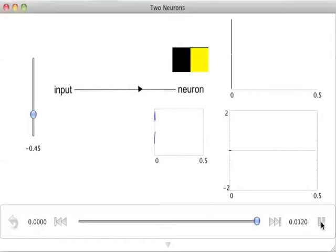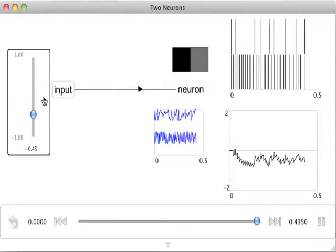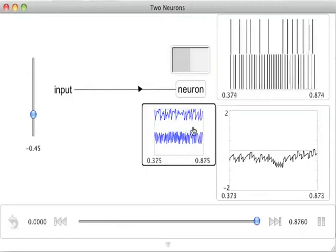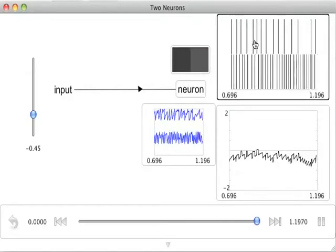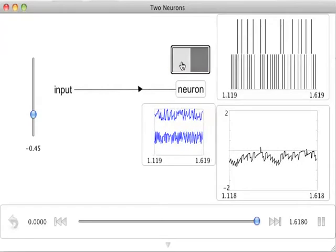Here we have a simulation of two neurons in NANGO. This is much like the simulation of a single neuron. Just to remind you quickly, this is the input. Here we have the sub-threshold voltage of the two neurons. These are the spike trains of those two neurons shown over time. And here we have those two neurons shown as if they were on a cortical sheet.